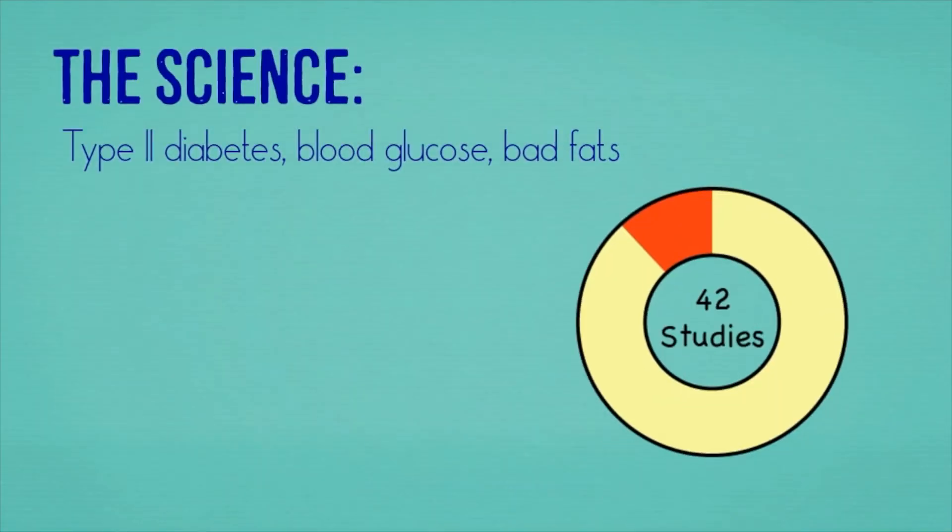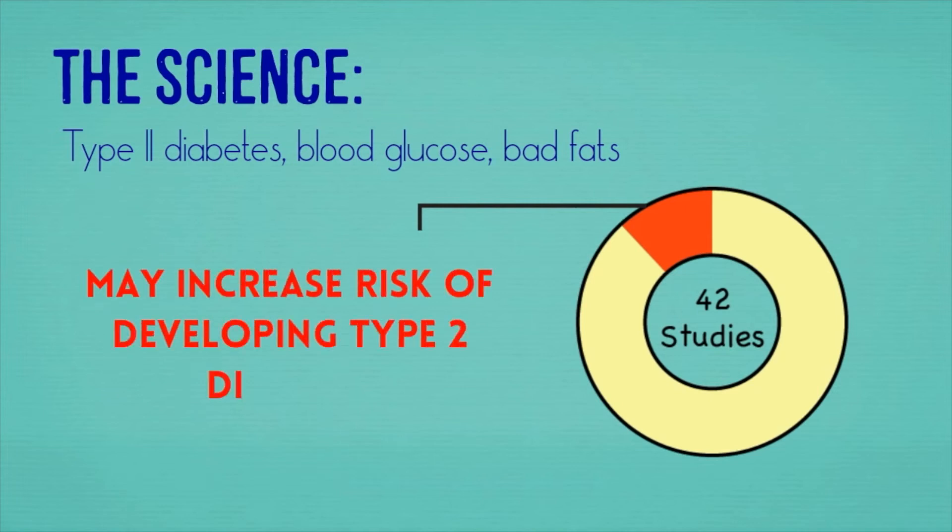But what about diabetes and blood sugar levels? Well, most studies showed that sugar substitutes have no effect on blood sugar, insulin levels, and the presence of bad fats. However, some evidence does suggest that consuming sugar substitutes can increase the risk of developing type 2 diabetes.